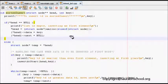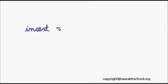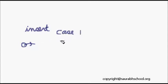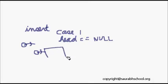We will learn about this function — there are several cases. The first case is the initial insert: if there is no element, head is equal to null. In this case, we just allocate memory, assign the key to head data, and set head next to null. This is the most trivial case where there is no element in the list.